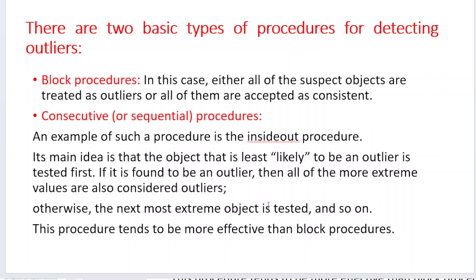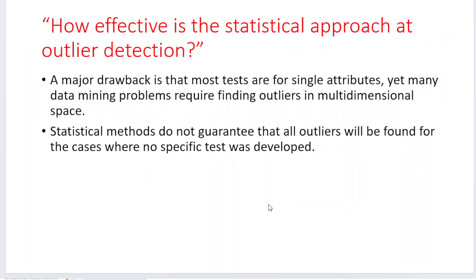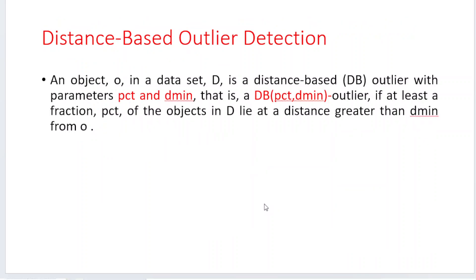A major drawback of statistical methods is that most tests are for single attributes, whereas many data mining problems require finding outliers in multi-dimensional space. Statistical methods do not guarantee that all outliers can be found easily. Therefore, there is another method called distance-based outlier detection, which we will see in the next upcoming video. Thank you for watching.